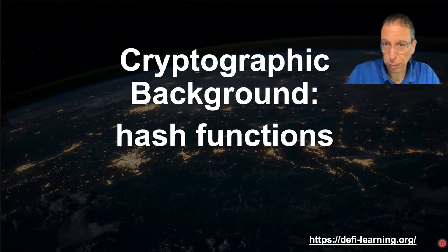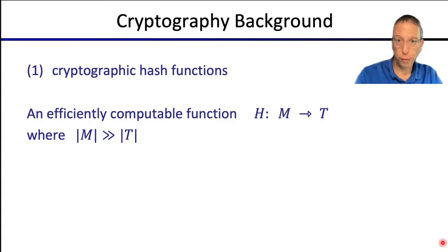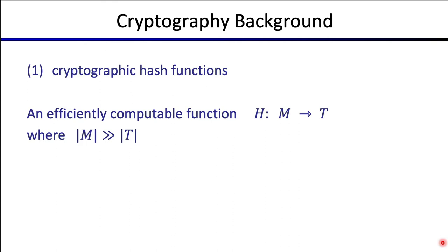Welcome back everyone. In this segment we're going to look at the cryptographic primitives that are needed to make a blockchain work. The first cryptographic primitive I want to tell you about is what's called the cryptographic hash function.